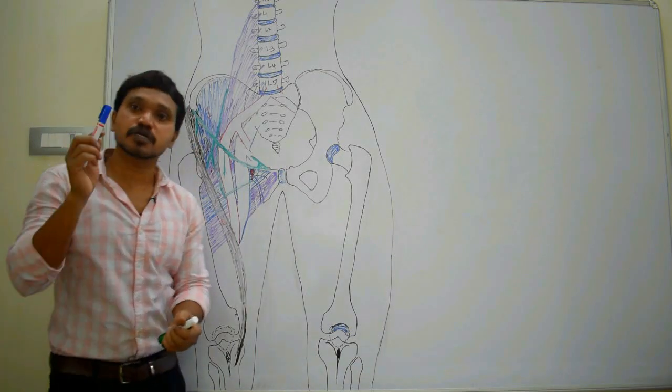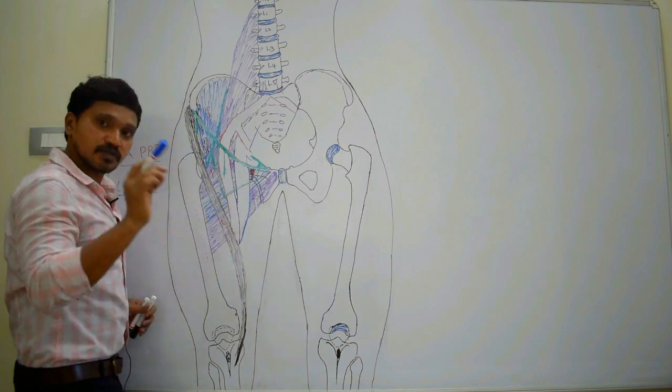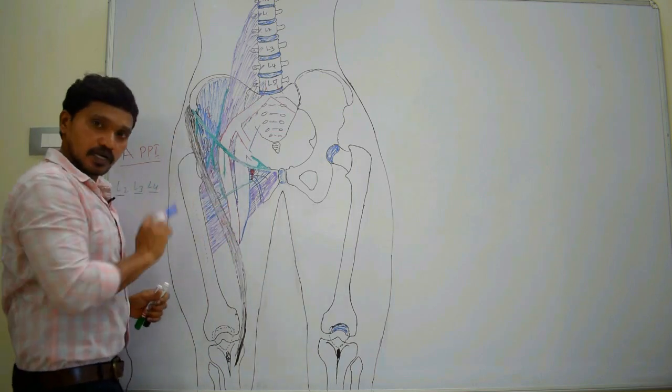Femoral triangle is a triangular shaped depression present in the upper one-third of anterior aspect of the thigh, below the inguinal ligament.